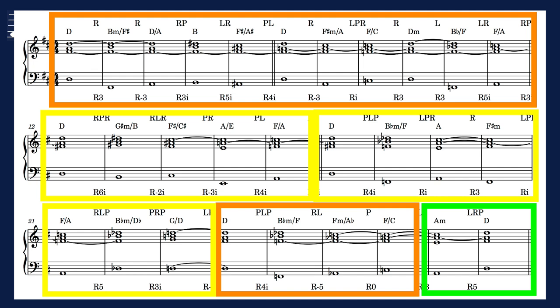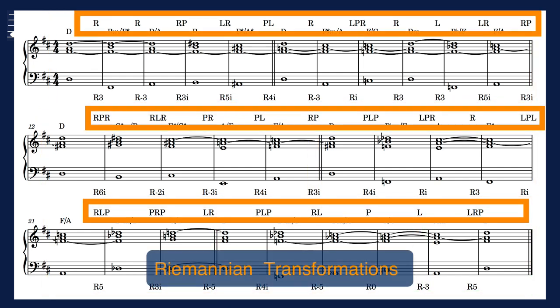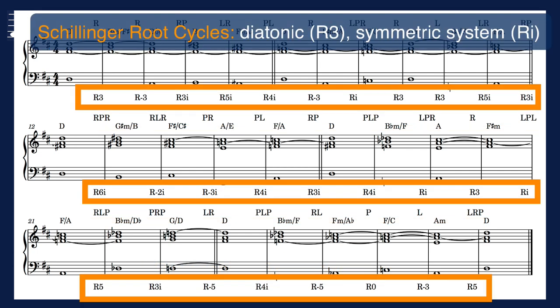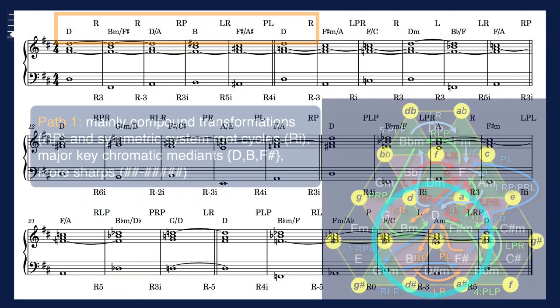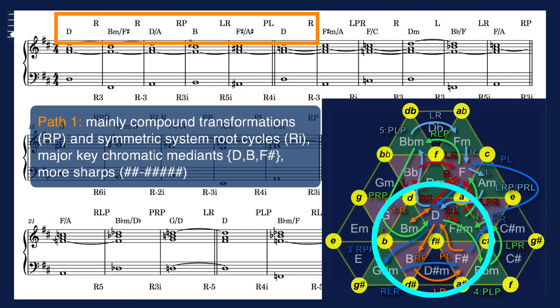The formal breakdown into A, B and Coda sections is shown here in colored rectangular frames. The first A section is repeated identically between the two B sections and therefore omitted from the score. Once again we see the Neo-Riemannian transformation labels above the staff, while Schillinger diatonic and symmetric system root cycles are displayed below the staff. The opening path moves from the tonic triad D major to the relative B minor and back, then dominated by several compound transformations that yield major key chromatic medians.